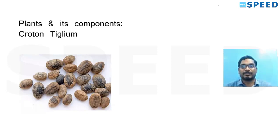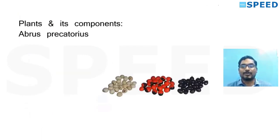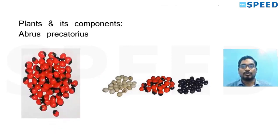One of the easiest image-based questions in forensic medicine: the red-black seeds, which are seeds of Abrus precatorius. In the bigger picture you can see the red-black color — these are Abrus seeds. An important point: Abrus precatorius is usually red with black.